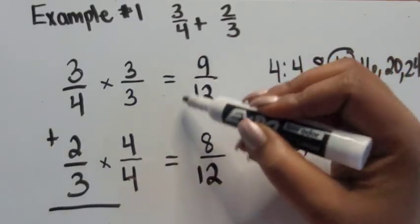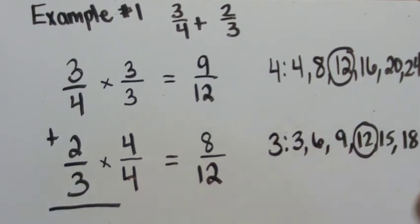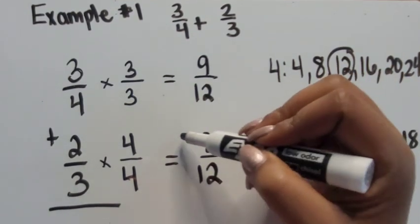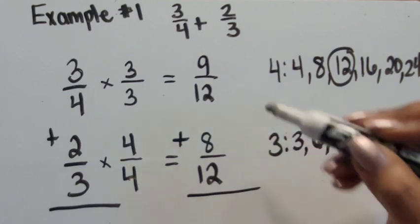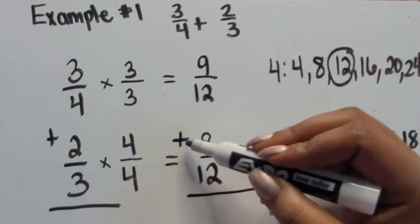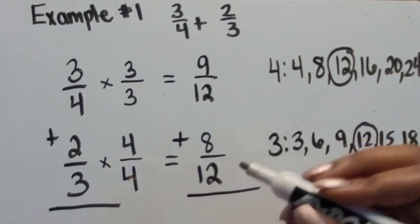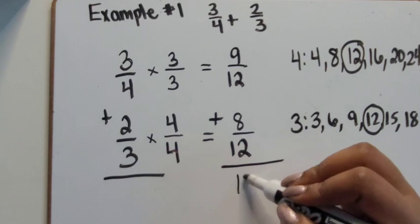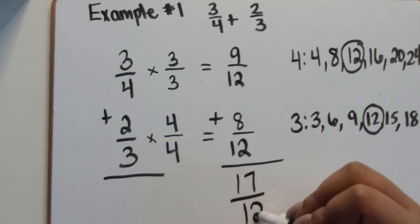Now that our denominators are the same, we can add them together. Nine-twelfths plus eight-twelfths equals 17-twelfths.